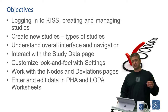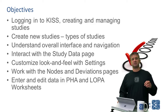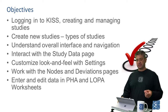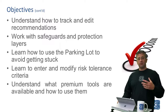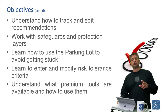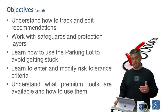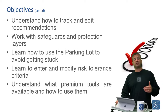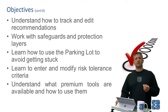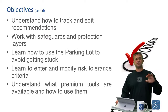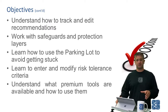Then we'll move on to working with some of the details. We'll talk about nodes and deviations and how we set them up and structure them. We'll then move on to entering and editing data on PHA worksheets and on LOPA worksheets. We'll move on to understanding how to track and edit recommendations, covering both the desktop version and the more advanced dashboarding available in the premium version. We'll also work with safeguards and protection layers — how to modify and track those — and understand that even though there is a safeguard list, you can use one safeguard in multiple different locations due to the relational database structure of how the data is structured.